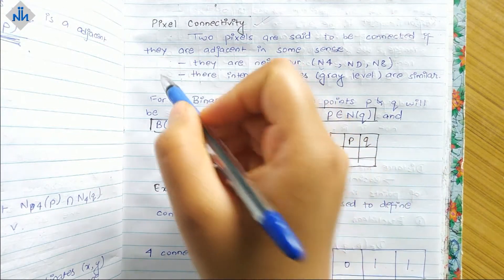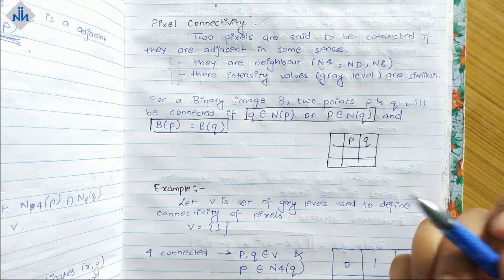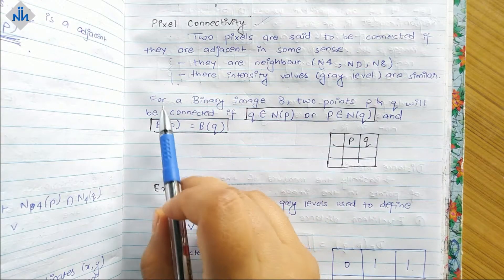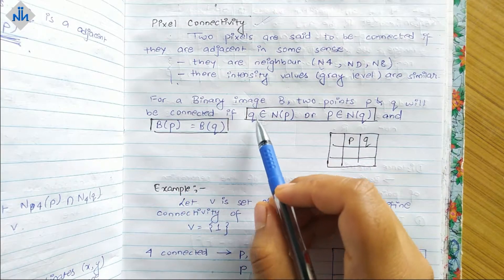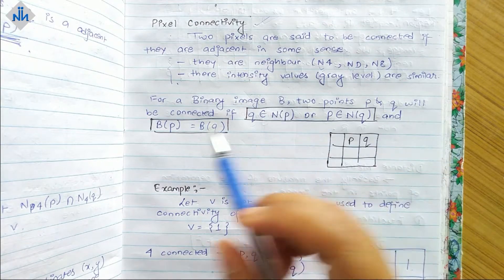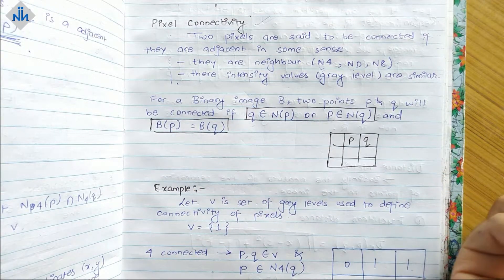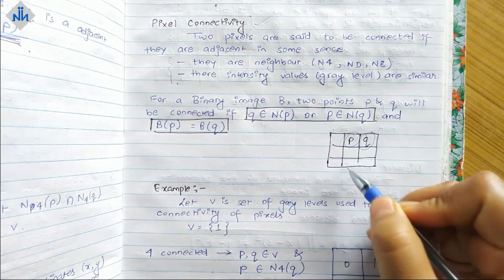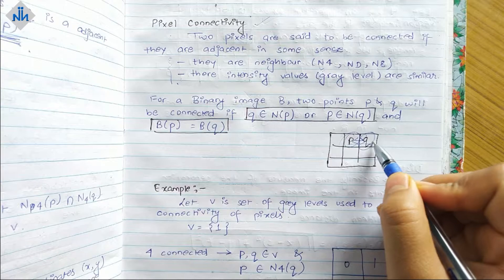If these two are met, then the two pixels are said to be connected. For a binary image, two points P and Q will be connected if Q is a neighbor of P, or P is a neighbor of Q, and the brightness of P is equal to brightness of Q, or the intensity levels are same.